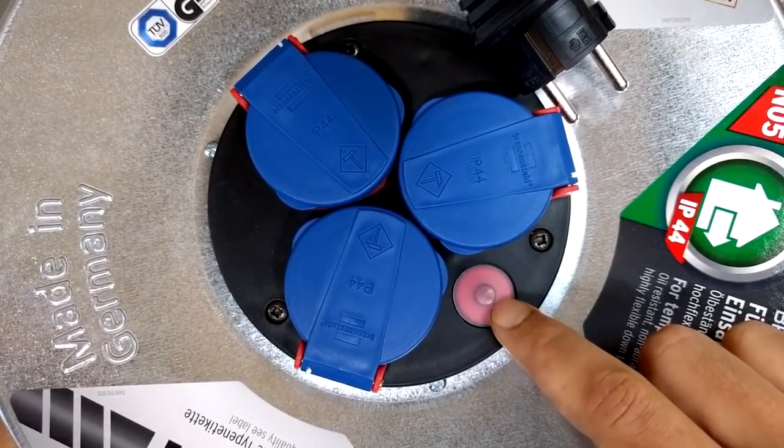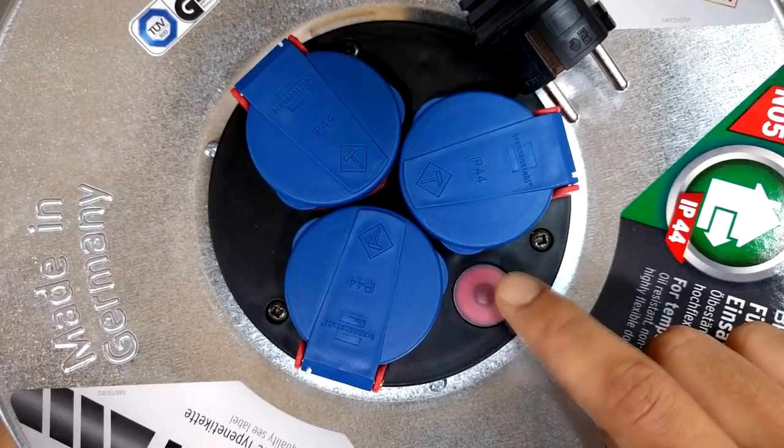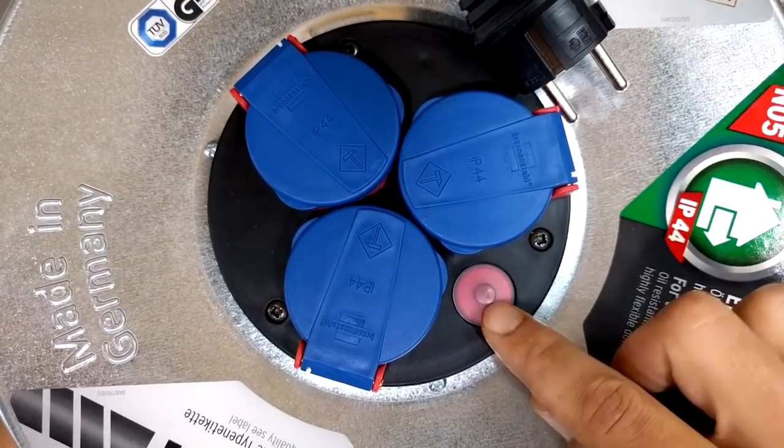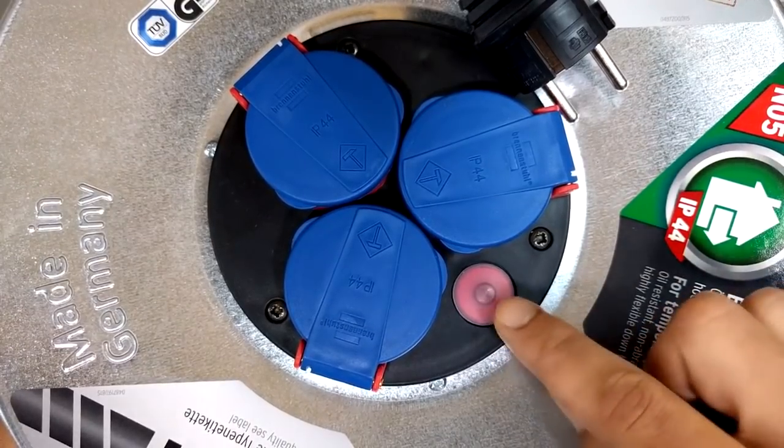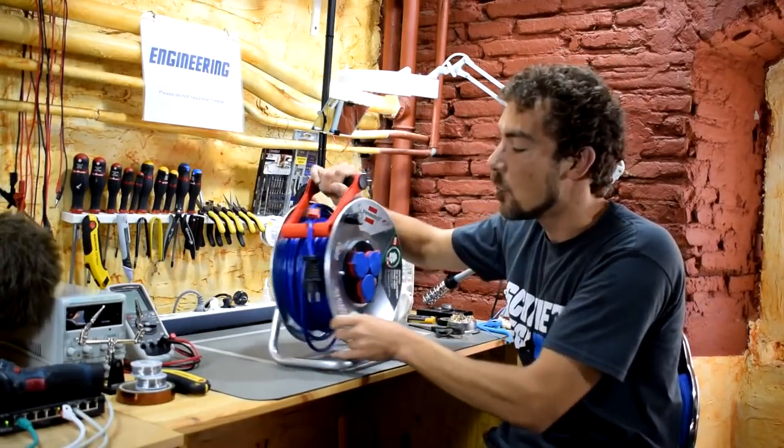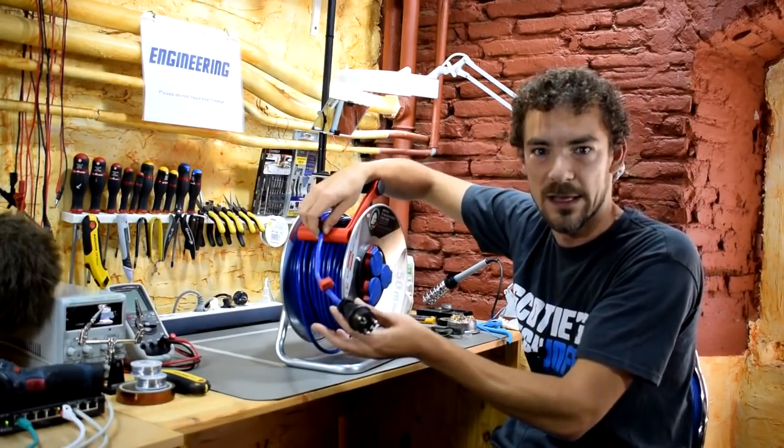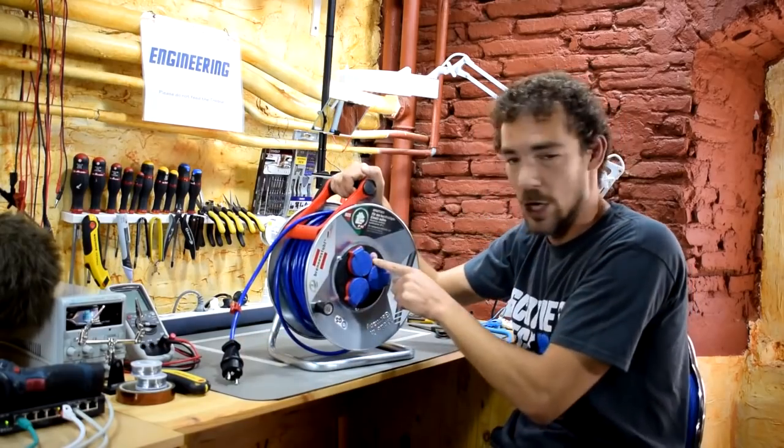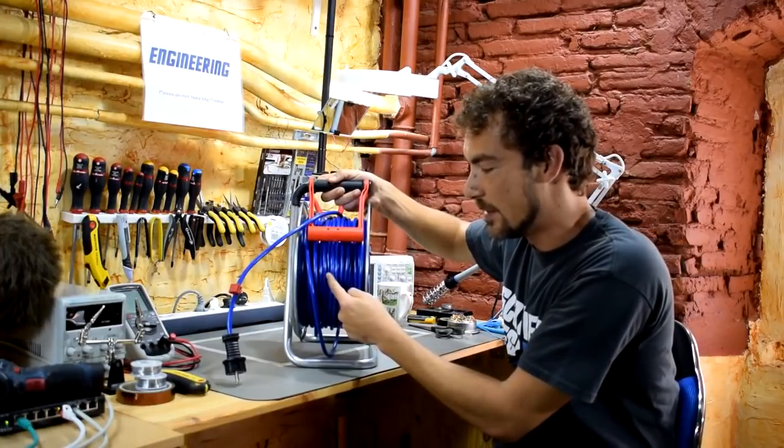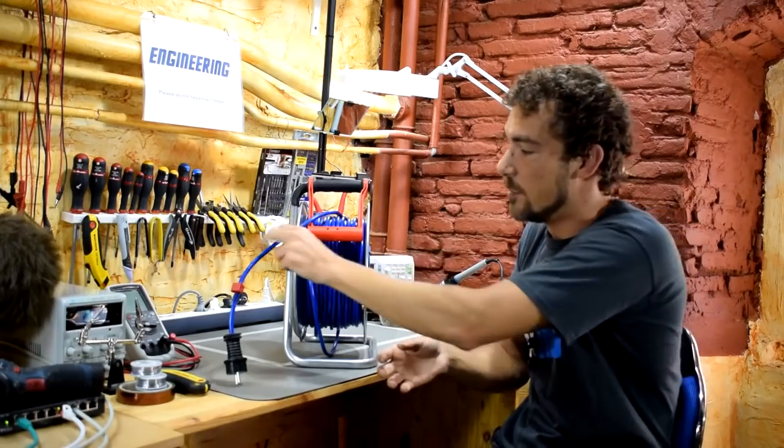Now, why do you want to unroll the cord fully, no matter what you plug in? Because this guy is going to trip when you pull the maximum amount of current allowed for this thing, which is 3,300 watts, which is about 14 and a half amps. So, this protection, if you leave the cord rolled up, or you pull off, like, say, it's a 50 meter cord, you pull off 10 meters, and you plug something in. This little thermal protection here is not going to protect against that, and what's going to happen is, because your cable is all coiled up like this, inside your cable you have three conductors. They have insulation on them, and then there's this blue sheath over it.